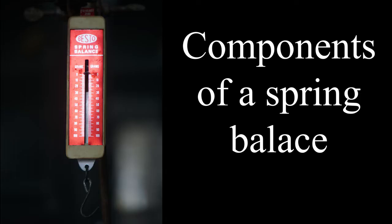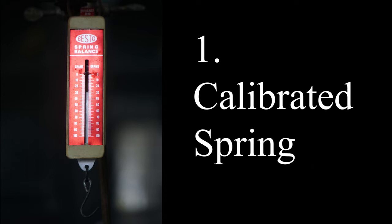Next, we will understand the components of the spring balance. First is the calibrated spring which is suspended from the top to the marker. This spring is made in such a way that under its own weight it will show exactly 0 grams.